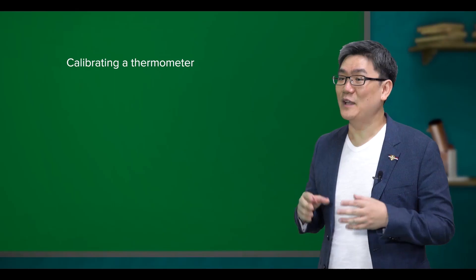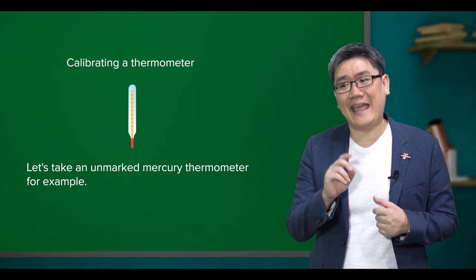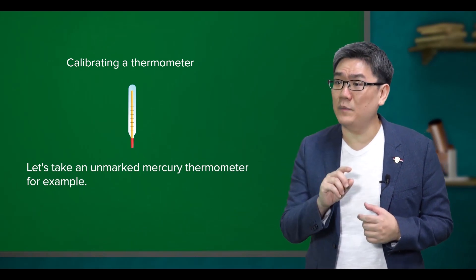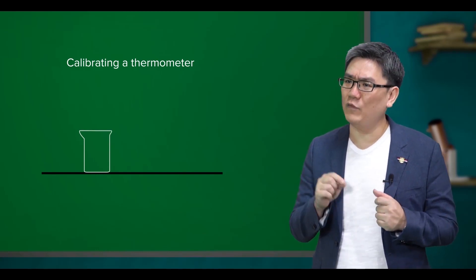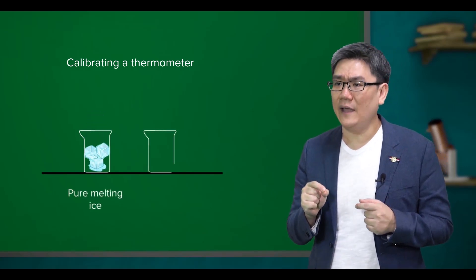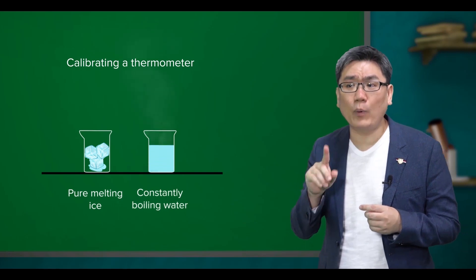So how do we do that? Well, let us take an unmarked mercury thermometer as an example. So, prepare two beakers, one of pure melting ice and one of constantly boiling water.